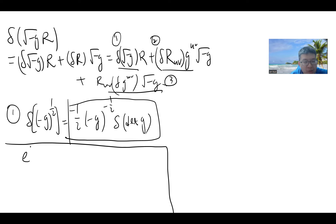Starting with some diagonalizable matrix Ã, you can show that det(Ã) = exp(tr(log Ã)). This follows because for a diagonalizable matrix, the determinant is the product of eigenvalues, while the trace of the logarithm sums the logs of eigenvalues — so they match.